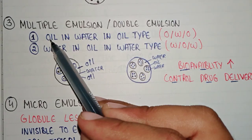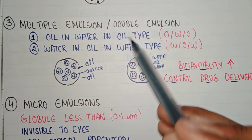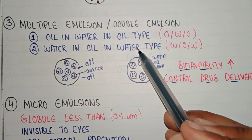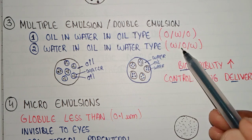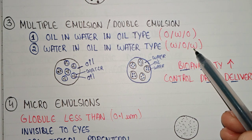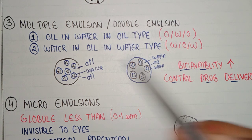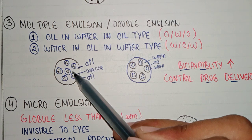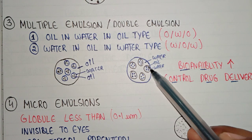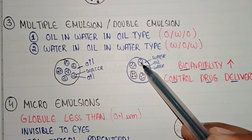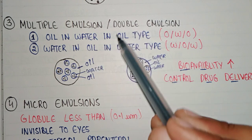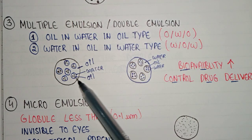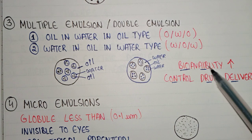The third type is multiple emulsion, which forms when we mix an oil-in-water emulsion in oil, or a water-in-oil emulsion in water. It is represented as oil-in-water-in-oil or water-in-oil-in-water, and is also known as mixed emulsion. As shown in the diagram, one emulsion type is dispersed within another. Multiple emulsions are used because they have high bioavailability in the body and can be used to control drug delivery.